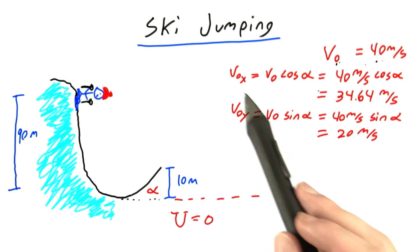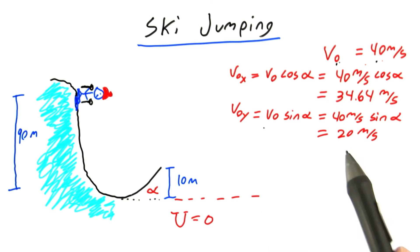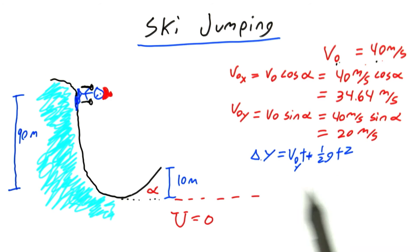In doing so, I find that the original x velocity is 34.64 meters per second, and the original y velocity is 20 meters per second. I'm going to use this kinematics equation to solve for the time t when the skier lands on the ground.